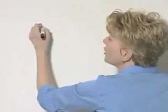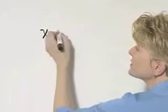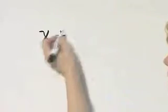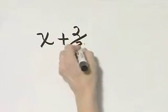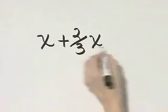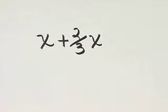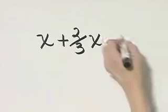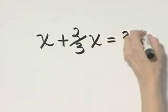A number, our unknown number will be x, increased by two-thirds of that number—remember, of means multiplication in this case—is 35.